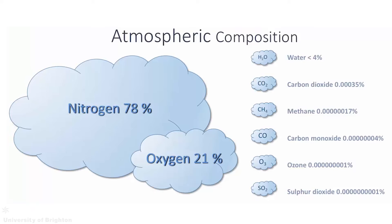In atmospheric science, we often refer to these quantities not as percentages but as a mixing ratio — that is, so many parts of one thing amongst so many parts of another. For instance, 0.00035% carbon dioxide is roughly 340 parts per million by volume, or PPMV for short. That is, there are 340 carbon dioxide molecules within a volume comprised of 1 million other molecules.